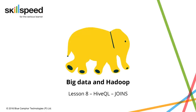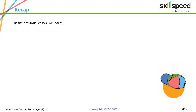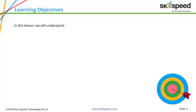Welcome to lesson number 8, module 7 of the Big Data and Hadoop Developer course. In this particular lesson, we will be demonstrating the join operations using the Hive Query language. Before we proceed, let's have a quick recap of the previous lesson, where we learned about querying tables using Hive Query language. In this lesson, we will look at what joins are, the types of joins, and demonstrate the concept of joins.